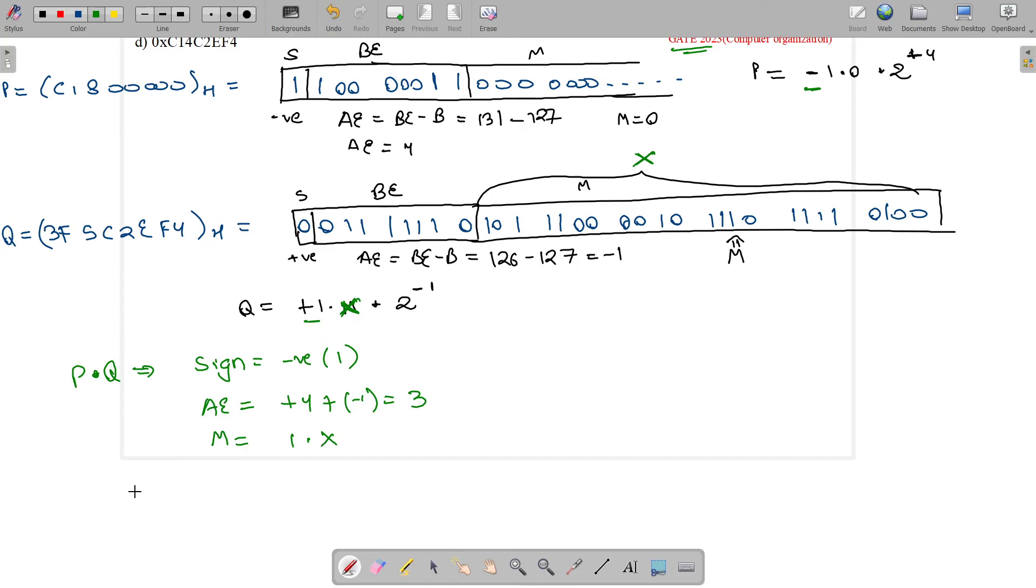What is P×Q? P×Q written in sign-exponent-mantissa format will be -1.X × 2^3.